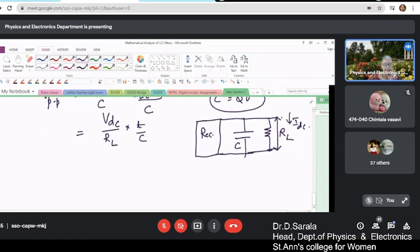So current flowing through this is i_dc, the voltage is given by v_dc by R_L into t by c. So now, once again the rms value can be written as what is the rms value? The peak value divided by root. The peak value by root. This relation you know.